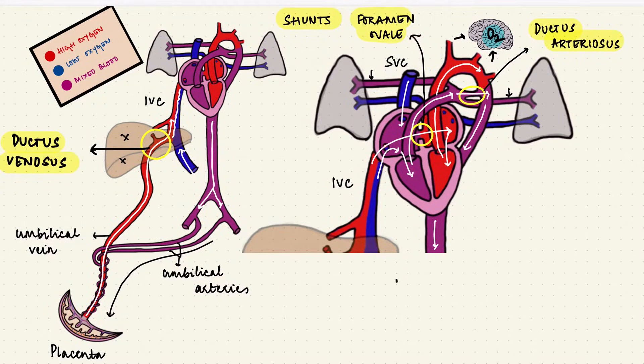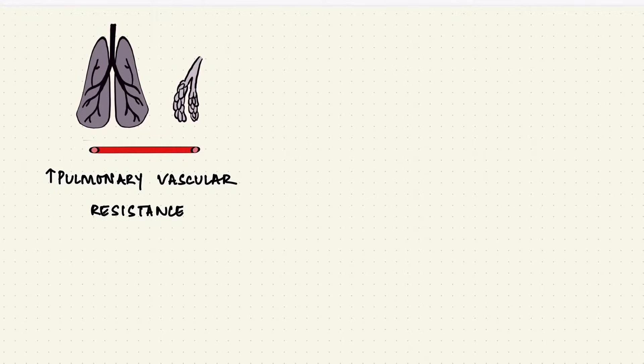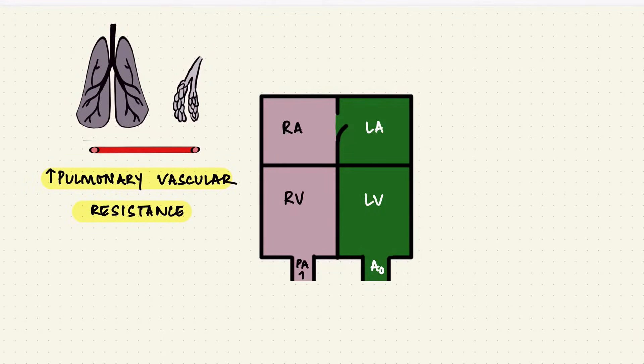So in both these shunts, blood moves from the right side to the left side. Why does that happen? So the fetal lungs are collapsed, the alveoli are closed, and the pulmonary vessels are collapsed. If the vessels are closed, the resistance to blood flow is high. That's the pulmonary vascular resistance. So that's high, and thus the pulmonary arterial pressure is high, as is the right atrial and the right ventricular pressure.